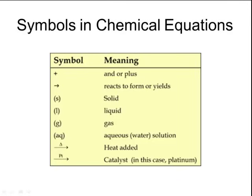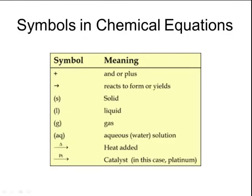Next to the chemical formulas in the chemical equation, you'll often see letters in parentheses, and that indicates the state of matter that each of those substances are in. An S in parentheses means a solid — this S is also used to represent an insoluble precipitate that forms after mixing two solutions together. An L in parentheses means the substance is in liquid form, a G means gas, and AQ in parentheses means that you have an aqueous solution. Aqueous simply means that chemical is dissolved in water.